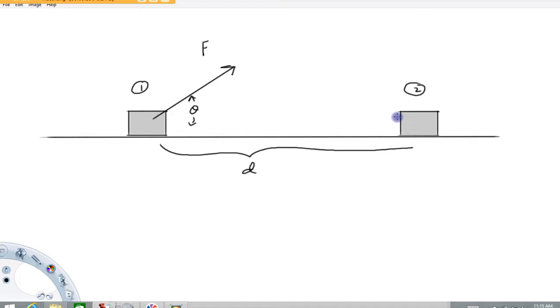Hopefully you've seen my first video on work. Work is force times distance, but the force has to be parallel to the distance. When the force vector is perpendicular to the velocity vector, then the work is zero. Only forces in the direction of motion do work.